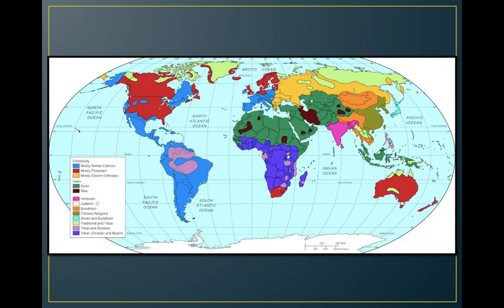This is a map of religions around the world. Christianity is the biggest religion in the world, split into three branches: Catholic, Protestant, and Eastern Orthodox. North and South America are primarily Christian. The areas where Spain and Portugal controlled are very Catholic because those countries are very Catholic. Protestant is more prevalent in northern Europe, which has to do with the Protestant Reformation. Islam has spread a lot, and you can see different Asian religions that have taken hold as well — unfortunately, a lot of religious conflict comes with that.